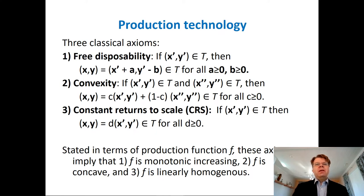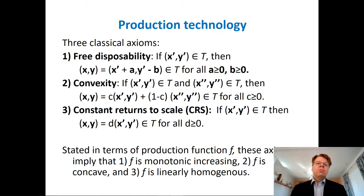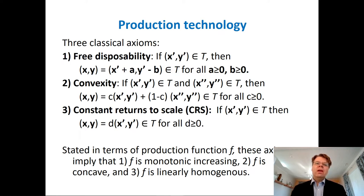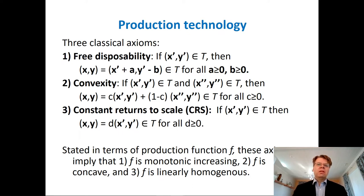Even though these axioms were stated in terms of production possibilities, in the case of a single output production function these axioms can also be stated there. The first axiom would imply that the production function is monotonically increasing, so the frontier cannot be decreasing at any point. The second axiom implies that F is globally concave, and the third axiom implies linear homogeneity — in the single input, single output case, this proportionality holds that increasing inputs by some factor D will also increase the output by the same factor.